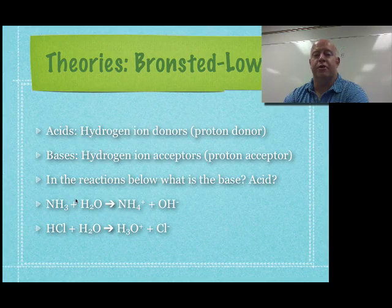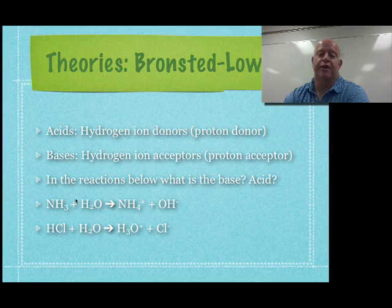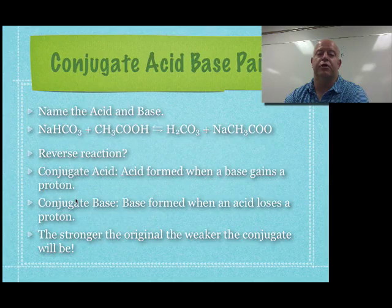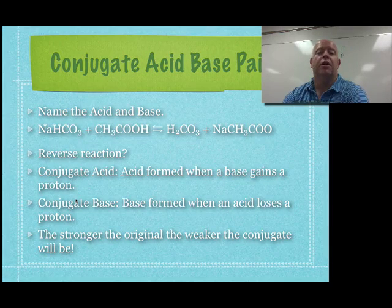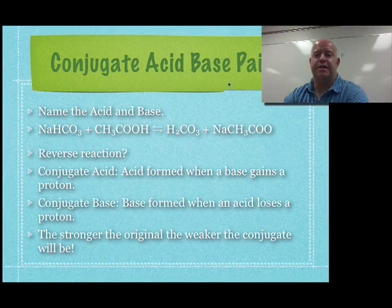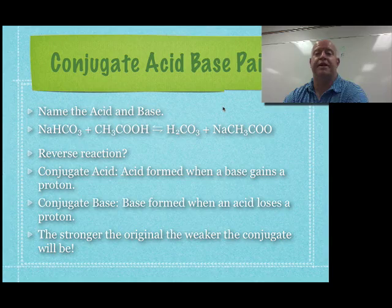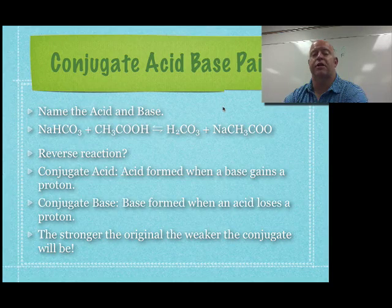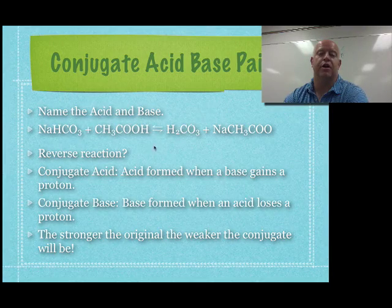To keep our terminology straight in terms of forward and reverse reactions, we use the term conjugates. The term conjugate acid-base pair means every acid has a conjugate base that correlates to it, and every base has a conjugate acid that correlates to it.